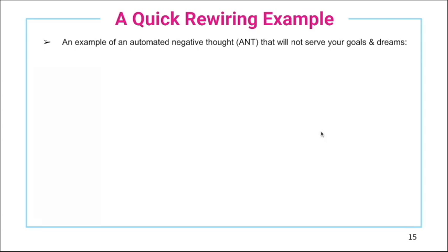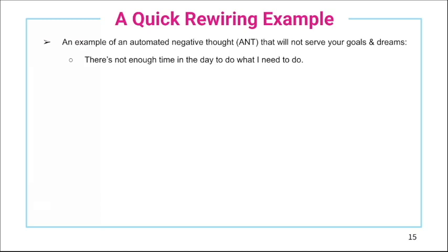I call automated negative thoughts ANTs. An example for a busy doer: 'there's not enough time in the day to do what I need to do.' We think this and don't even analyze it — we just react. 'There's not enough time' — okay, I can't do that — and we make decisions and usually feel stressed as a result. The behavior it causes is probably: I'm not going to do that because it takes too much time. Most of your thoughts that you think every day are on automation. We aren't even aware of them, yet we react with feelings rooted in our beliefs — and that's what I help people identify and rewire.